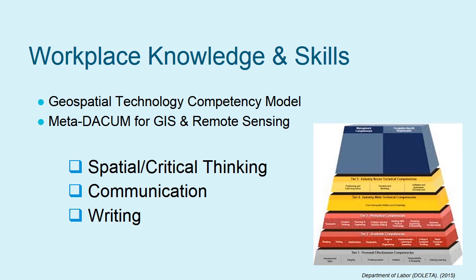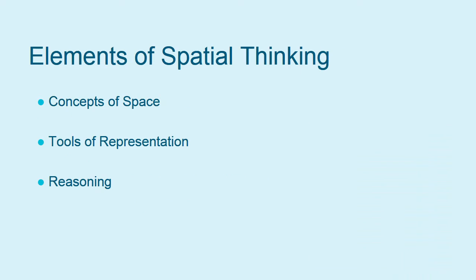Let's take a look at the different elements of spatial thinking. In 2006, the National Resource Council identified three elements of spatial thinking in a publication called Learning to Think Spatially. The elements are: 1) Concepts of Space, 2) Tools of Representation, and 3) Reasoning. Remember the Landsat image of Bastrop? Let's use it as we explore the elements of spatial thinking.